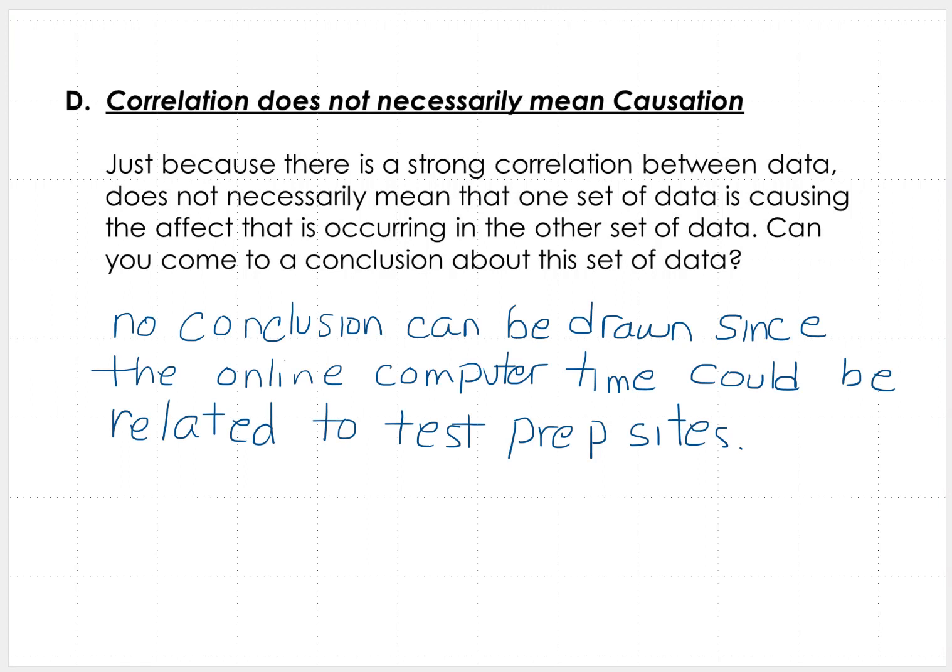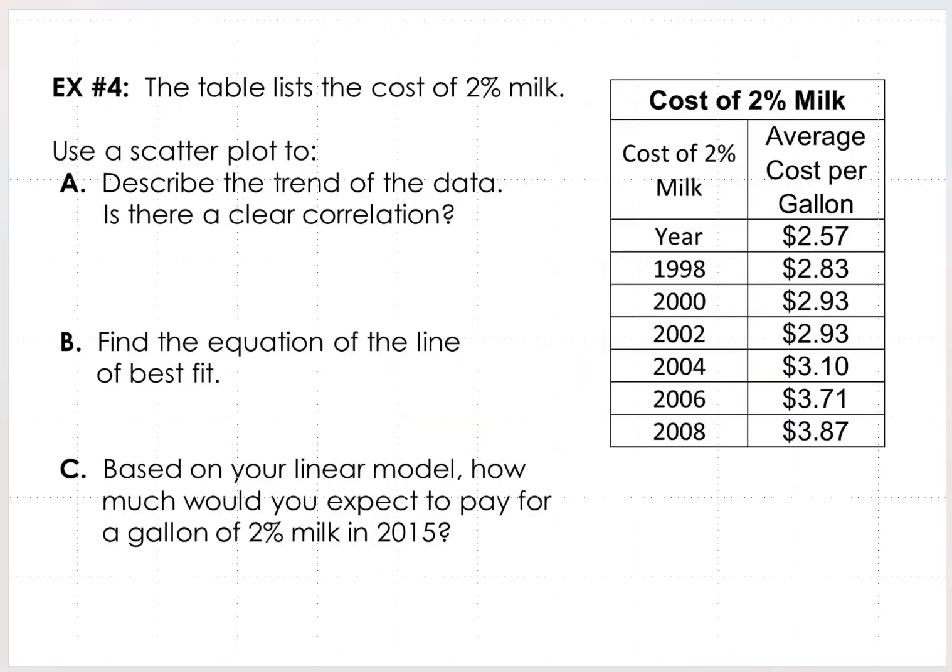So you can come up with your thinking and maybe discuss that together as a class. And again, I said it's something along these lines. In example four, the table lists the cost of 2% milk. And we want to use a scatterplot to describe the trend of the data and see if there's a clear correlation.